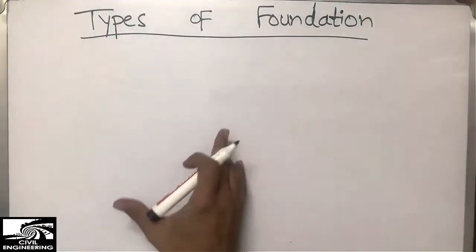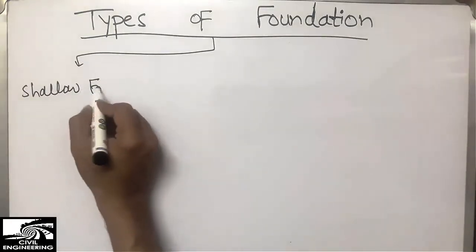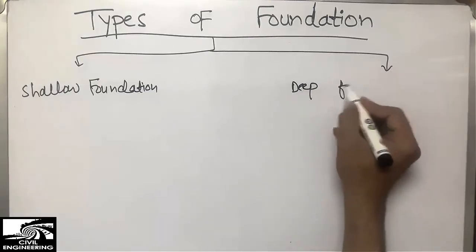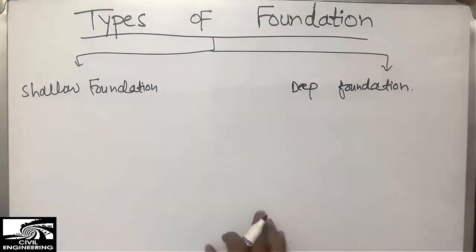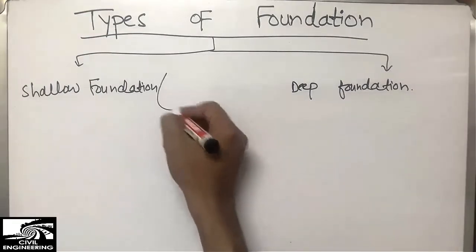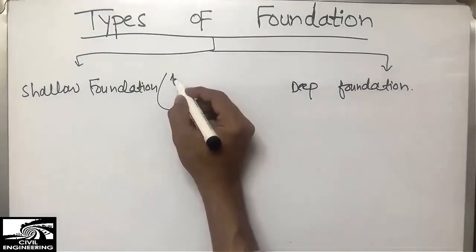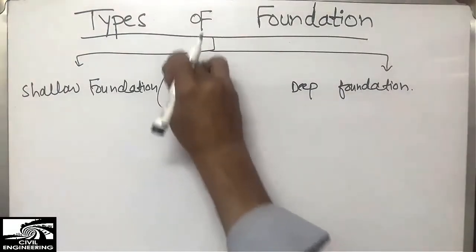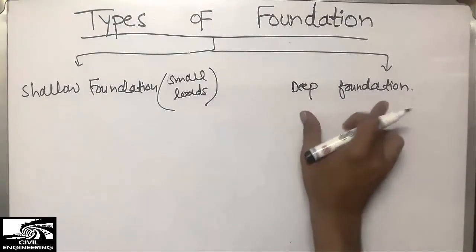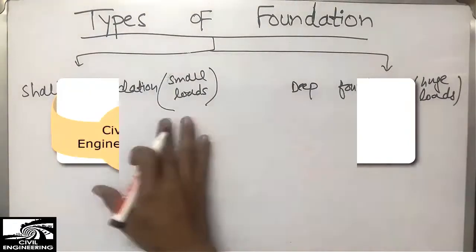There are two main types of foundation: one is the shallow foundation and the other is the deep foundation. The shallow foundation is used mainly for residential buildings where there is not too much load on the site and the soil bearing capacity is low. We provide shallow foundation for small or light loads of the superstructure. Deep foundation is provided when there is a huge load coming on the site.